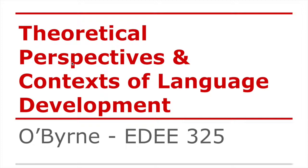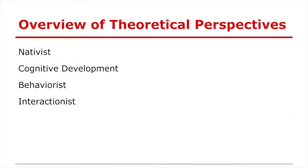It's a mouthful, but basically this is chapter two in our Otto textbook. Some of this we already saw and went through in class before. In this chapter, Otto basically provides four different theoretical perspectives that are going to frame our look at language development: nativist, cognitive development, behaviorist, and interactionist.